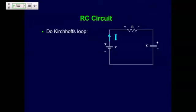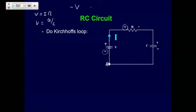Your book goes through this, and basically what we can do right now is write an equation using Kirchhoff's loop. This is one loop, so it's a little bit easier. The voltage across the resistor is IR, and the voltage across a capacitor is Q over C. Starting at point A going clockwise, I get negative V, then positive IR, then positive Q over C, and that all equals zero.